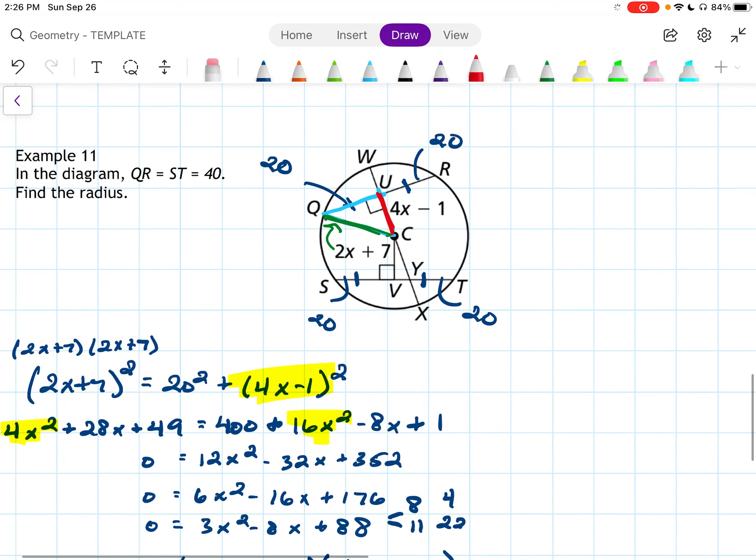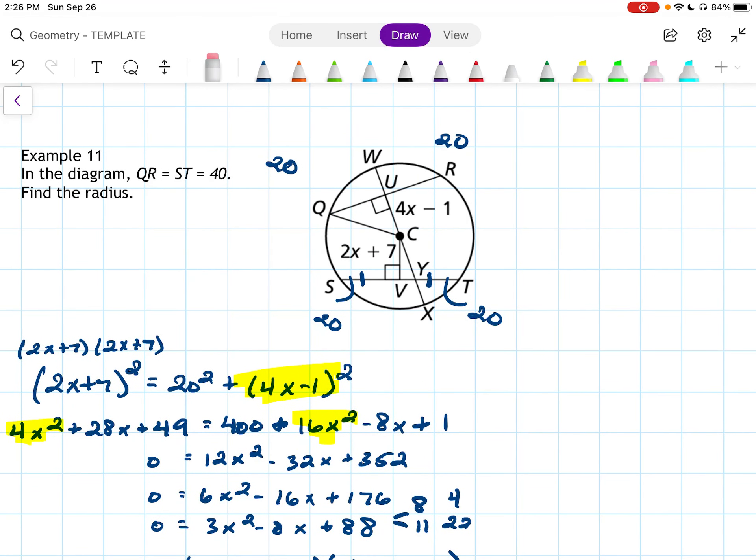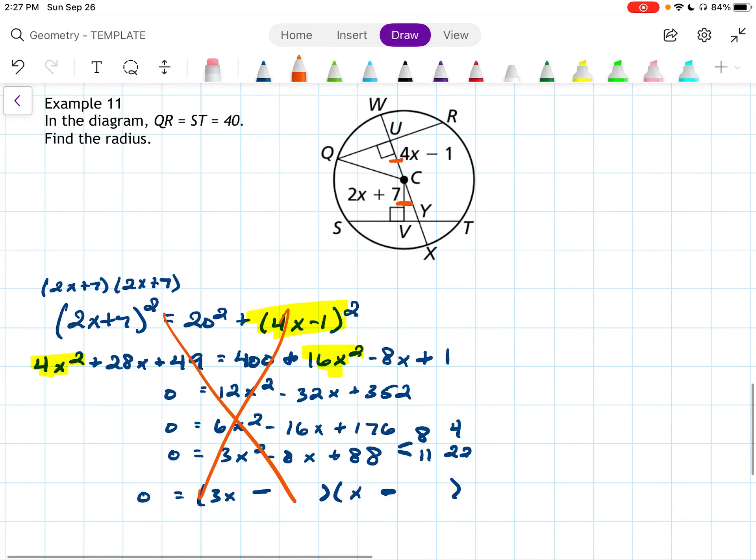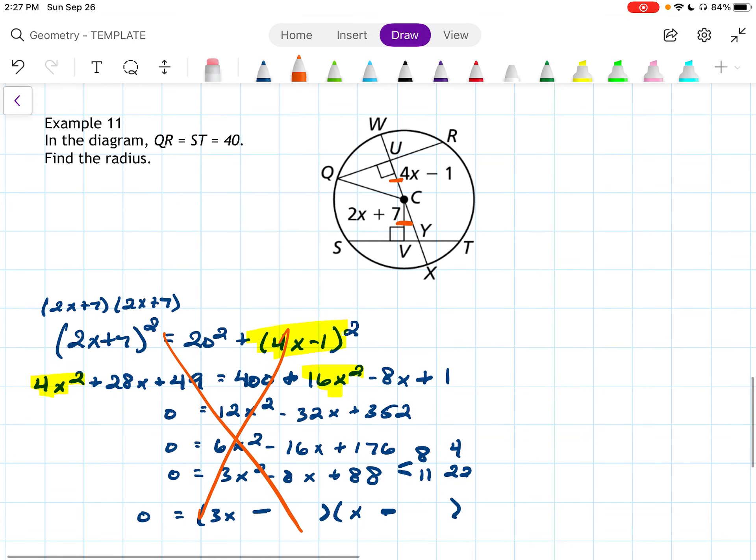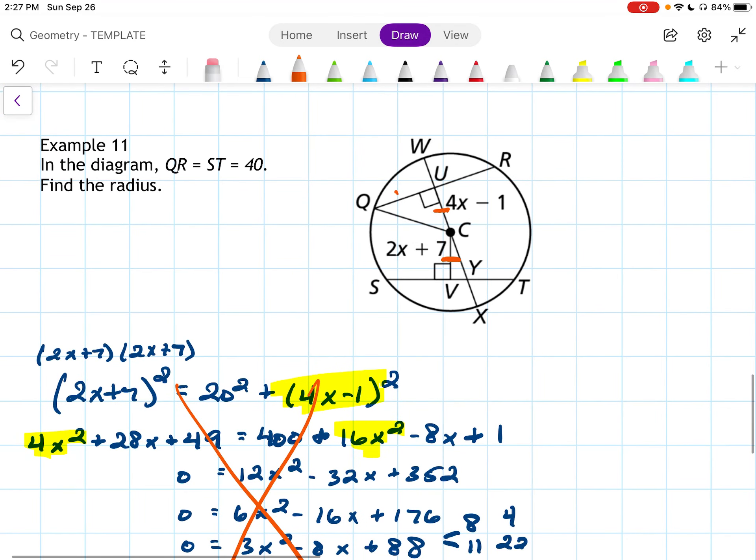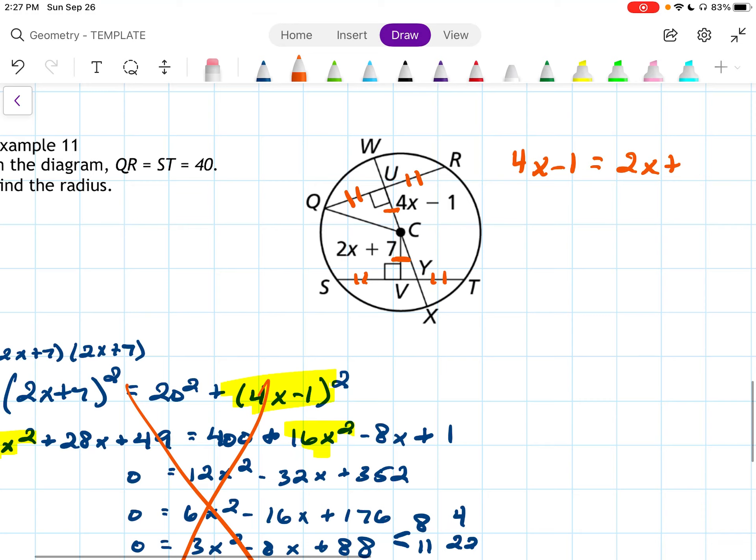Let me erase my markings so I can see it easier. This is talking about the 4x minus 1. This is the 2x plus 7. So all of this was not needed. So let me start over. We're looking here. We know that this, this, this, and this are equal. And then I could say that 4x minus 1 equals 2x plus 7. Alright, lots easier here. This will be 2x equals 8, so x equals 4. Alright, way easier.